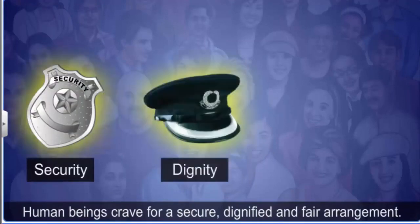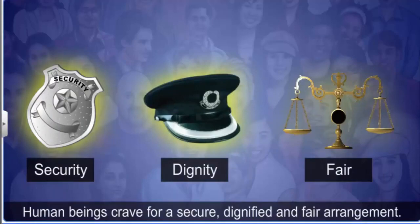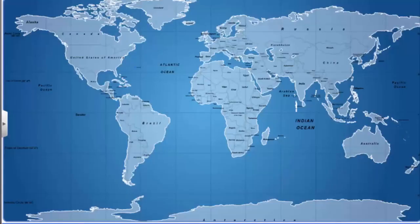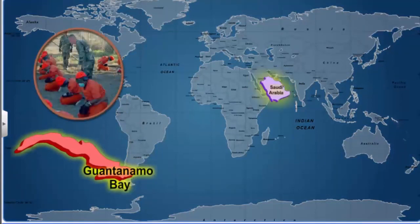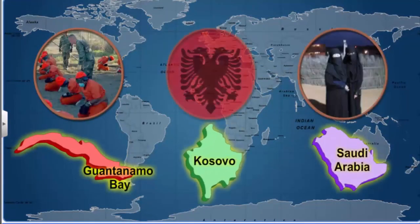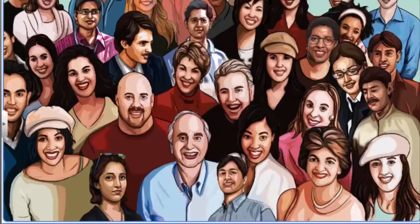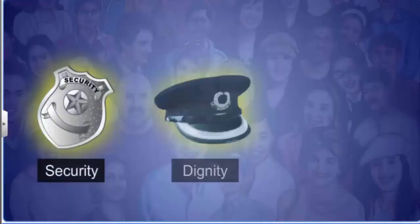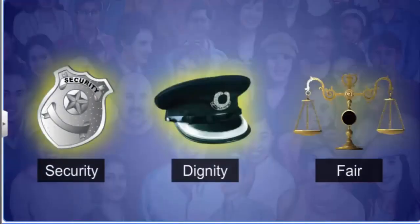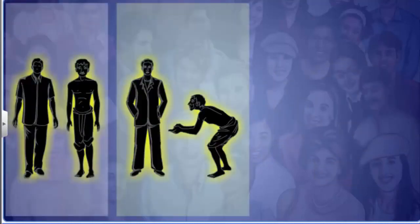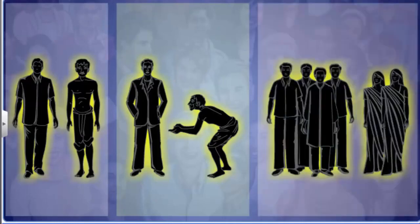Human beings crave for a secure, dignified and fair arrangement. The one thing common to the prisoners of the Guantanamo Bay, the women of Saudi Arabia and the Albanians in Kosovo is their being deprived of their basic rights. Everyone expects a system that assures security and dignity and is fair to all irrespective of race, caste, religion or gender. This desire for a system where a minimum is guaranteed to everyone, be it the powerful or the weak, the rich or the poor, the majority or the minority, is the real spirit behind aspiring for rights.